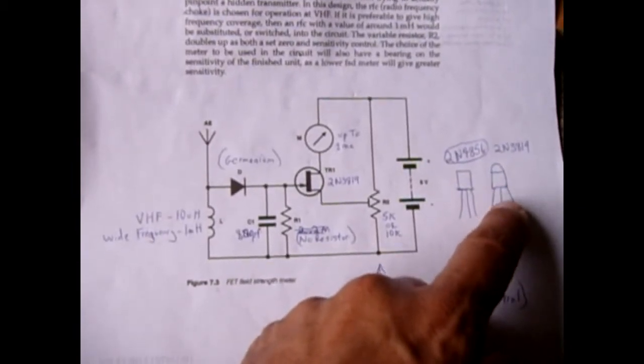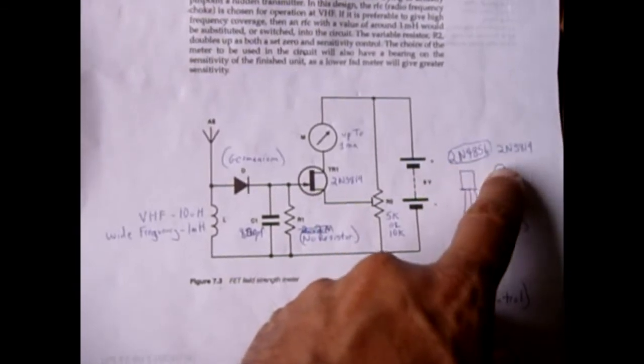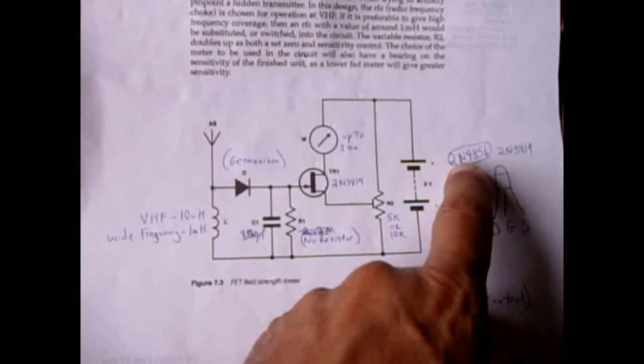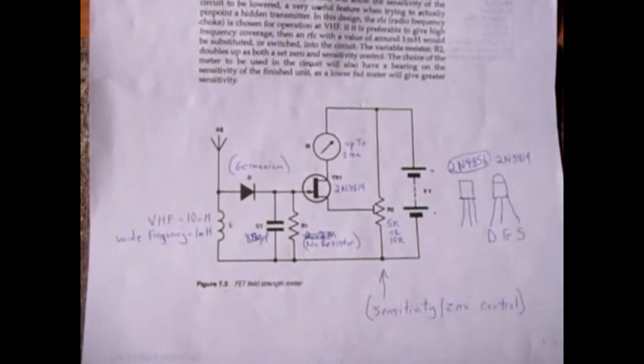Now if you already have a circuit like this I would suggest replacing your existing 2N3819 with the 2N4856 and you'll be amazed at the difference in the detection.